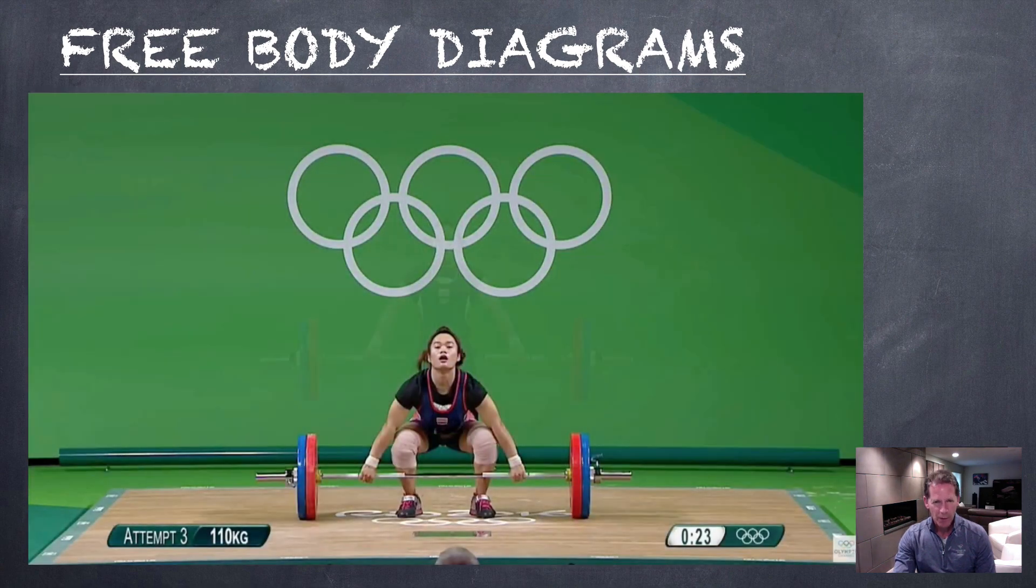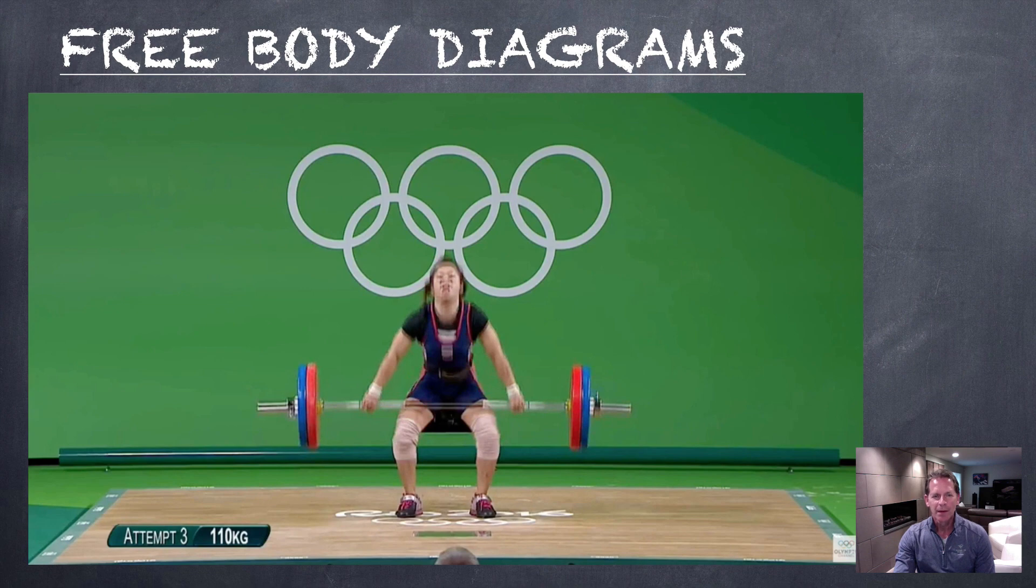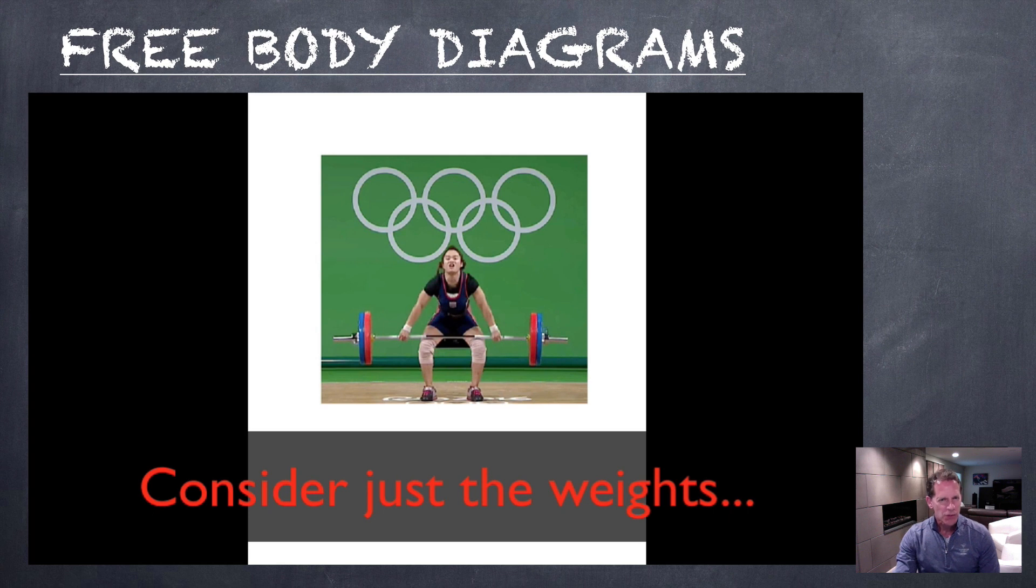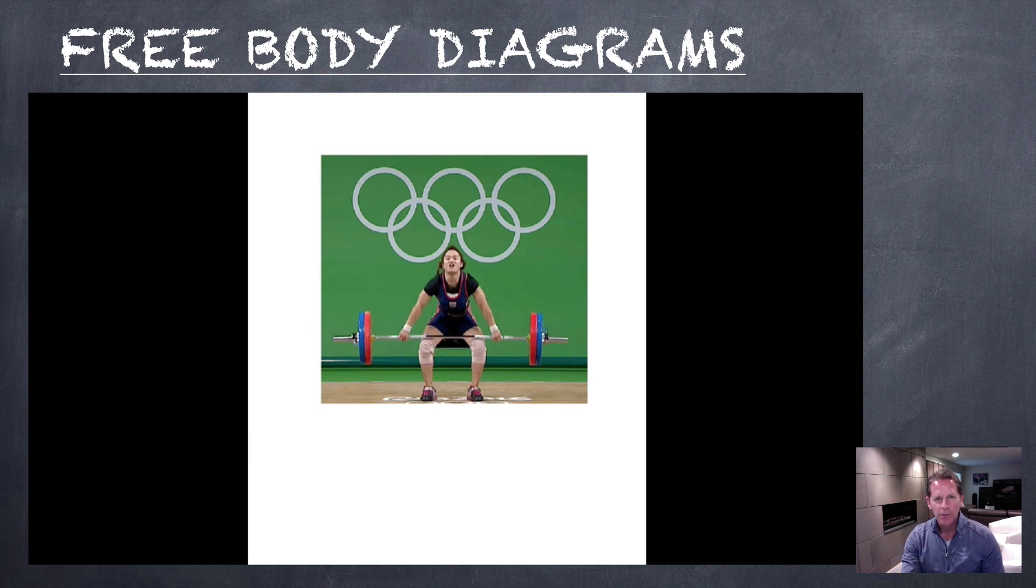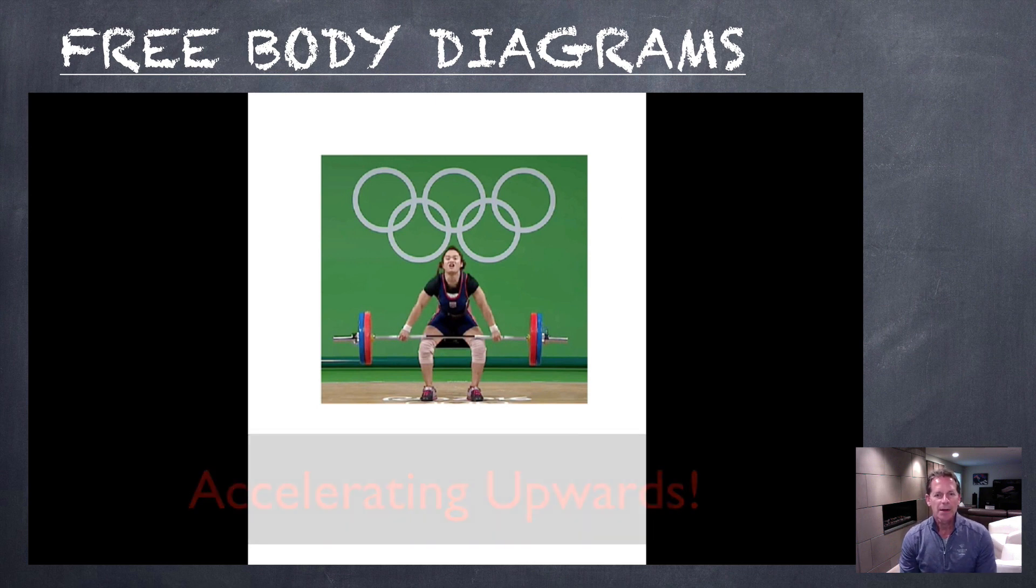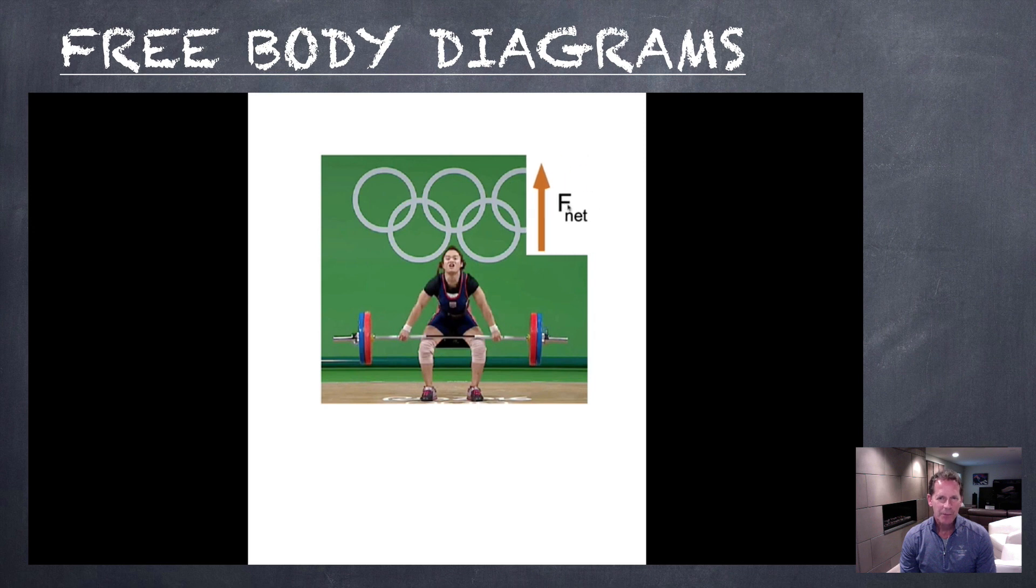So first we're going to focus on this part right here, just where she's accelerating the weights upwards, and we're going to analyze the forces involved here. So consider just the weights - although we've got our arms and our feet and the floor, just consider one object at a time. And we know that it's accelerating upwards, so we know that there must be a net force in the upwards direction on these weights. Okay, now using our intuition, what forces must be there? Well, we're on earth, there's got to be a force of gravity pulling down on these weights.